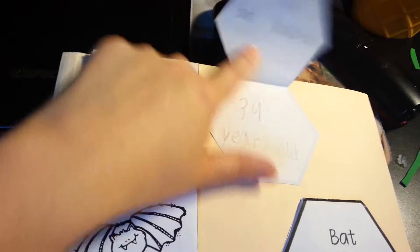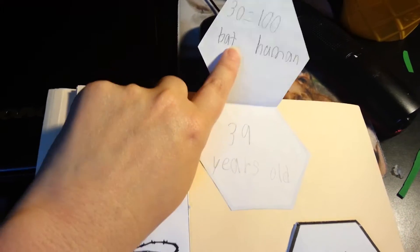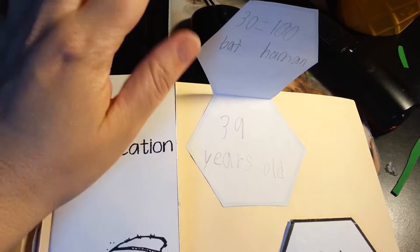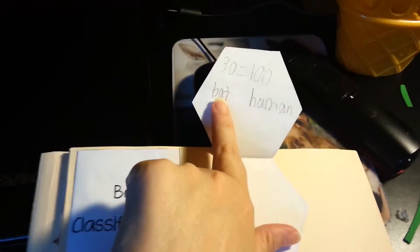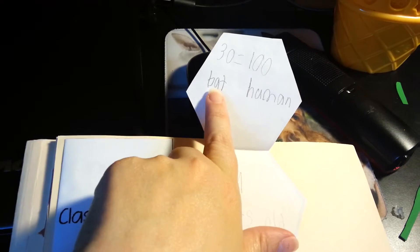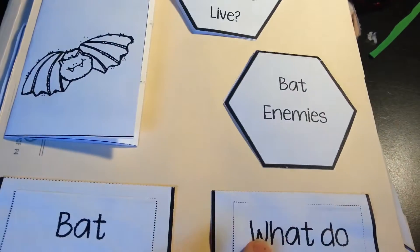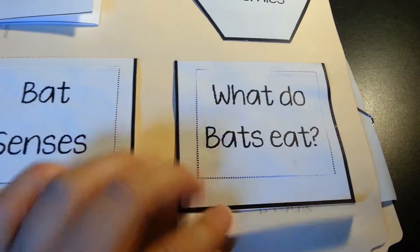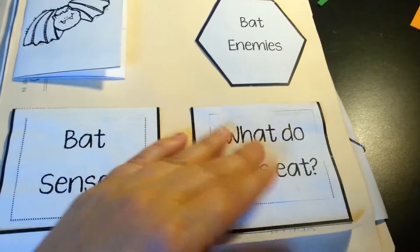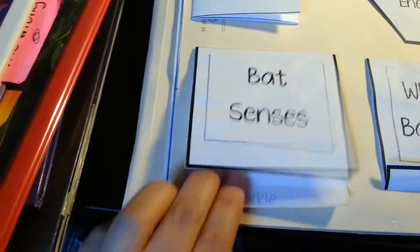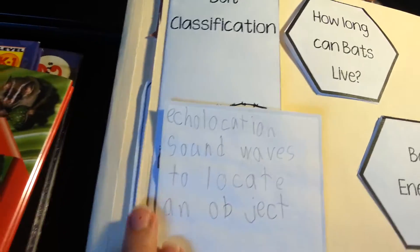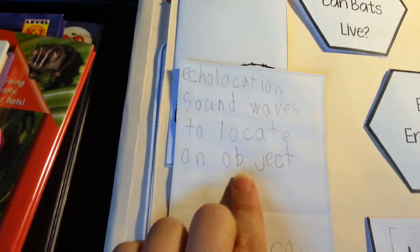We learned how long bats can live — he wrote that 39 years was the oldest bat we learned about, and that a bat at 30 years equals 100 years in human terms. He also did the flap for bat enemies, writing everything that can eat a bat, and what bats eat. For bat senses, he learned about echolocation and wrote the definition for that.